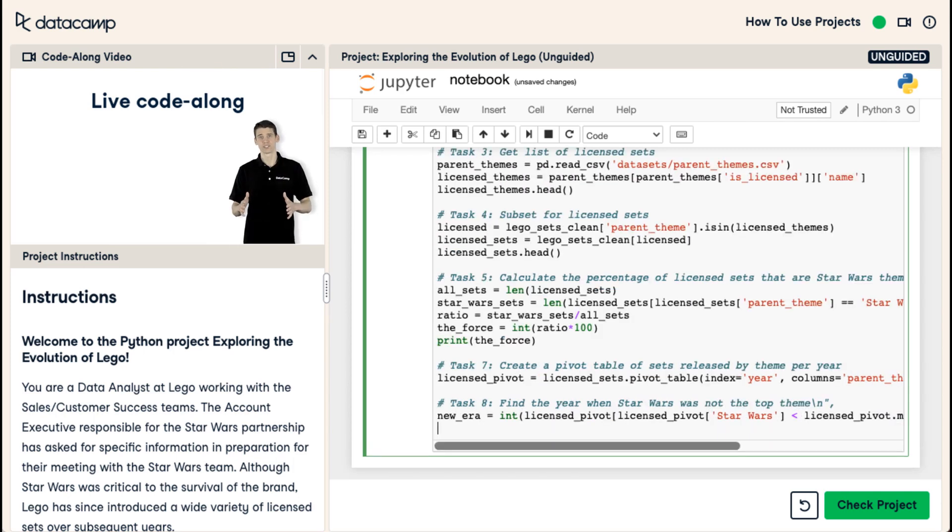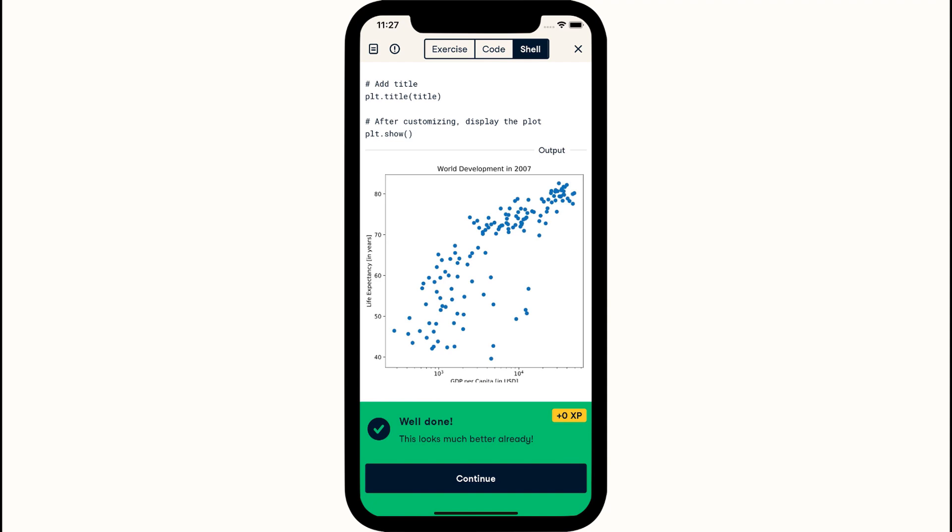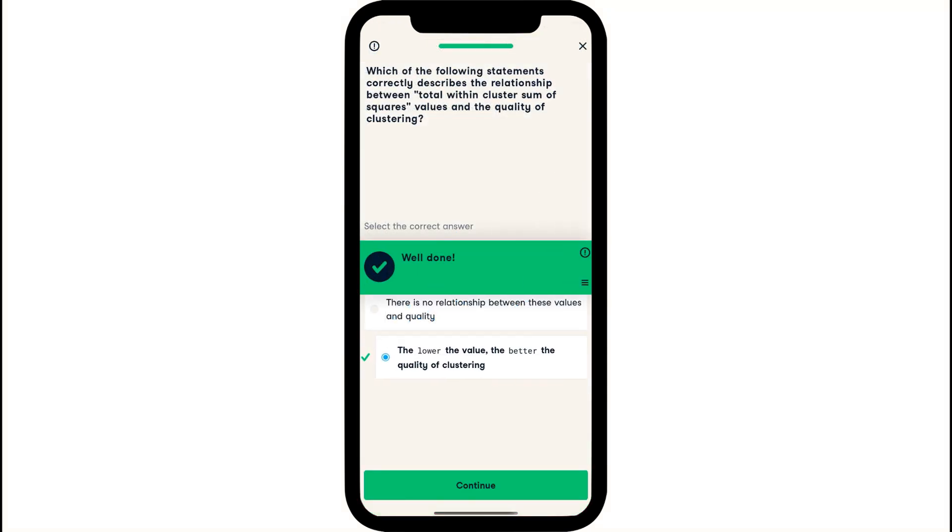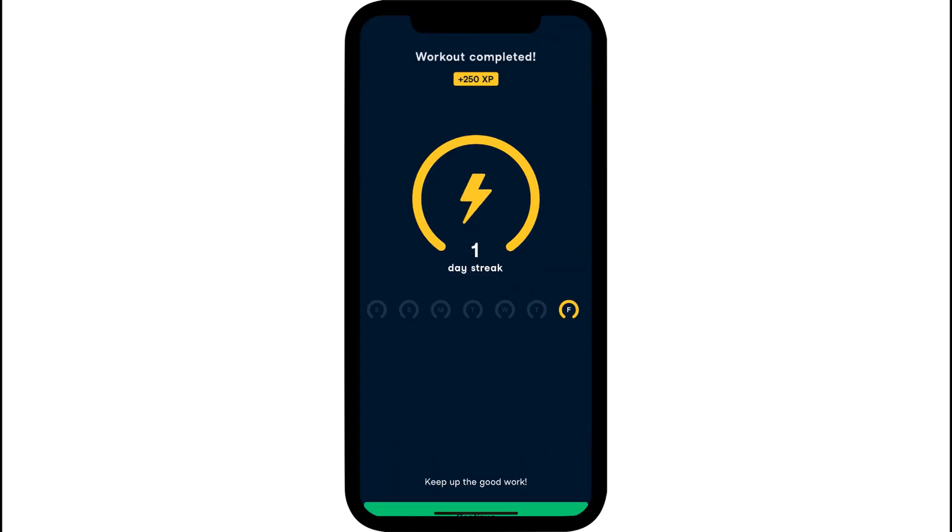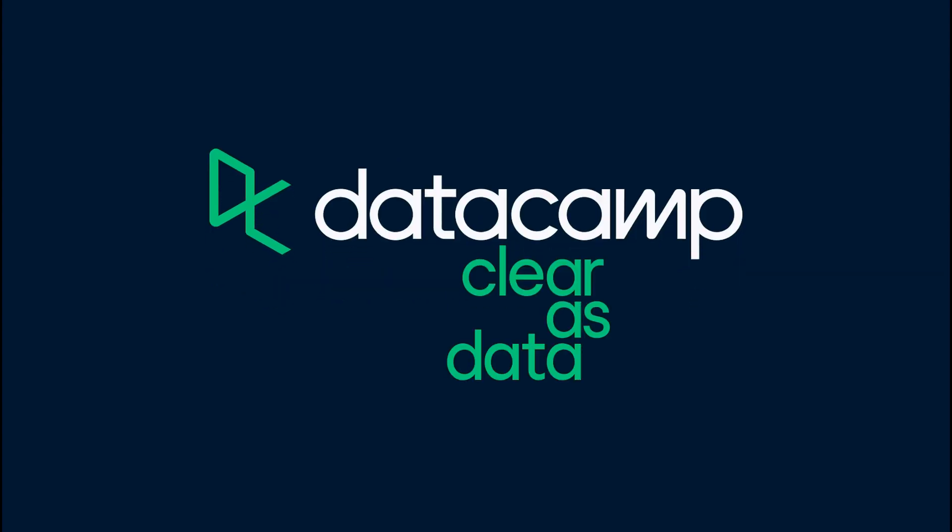It's well worth giving Datacamp a try. They offer the first chapter of every course completely for free. And subscriptions start at $25 per month, which is great value. Also, no special software is required. Datacamp courses can be completed using your browser. Stand out from your peers by developing the data skills you need to take your career to the next level. Sign up for Datacamp for free using the link in the description below.